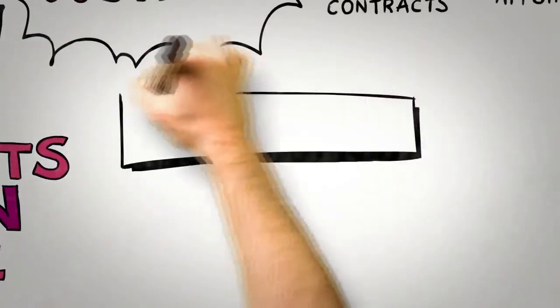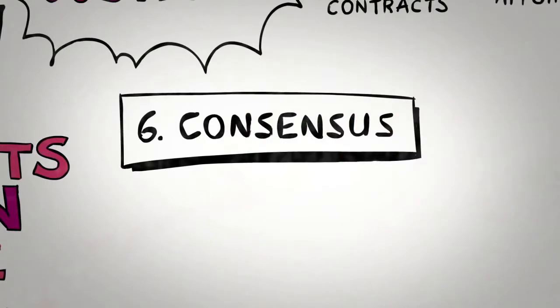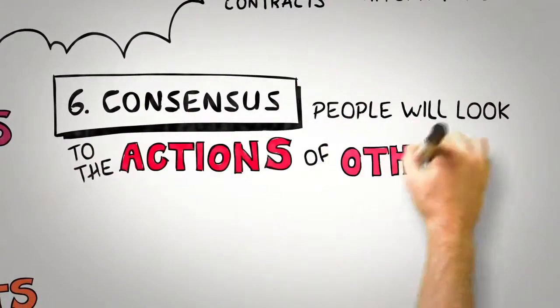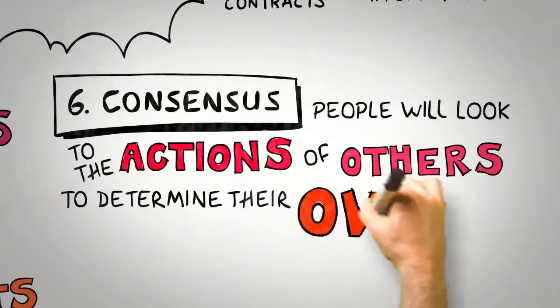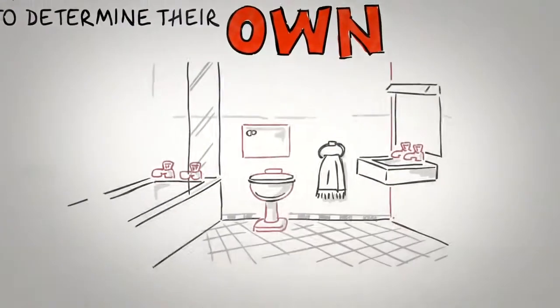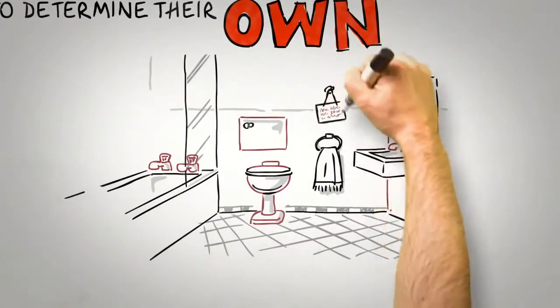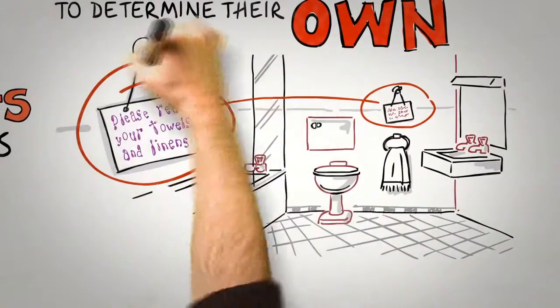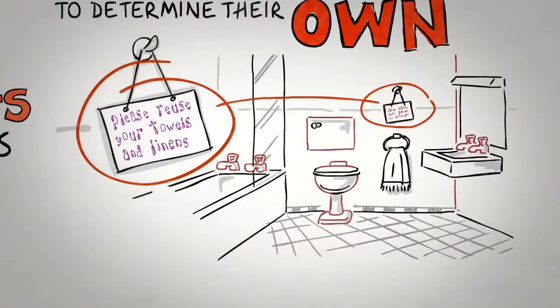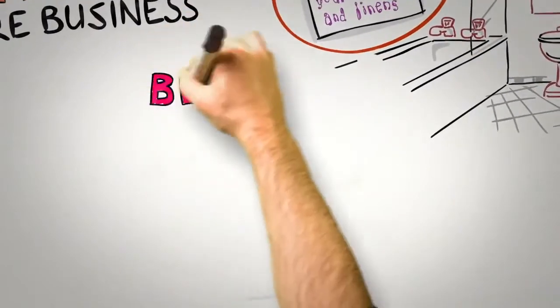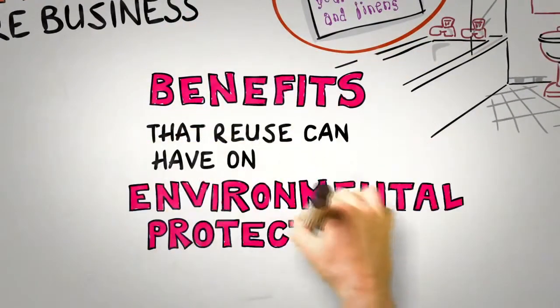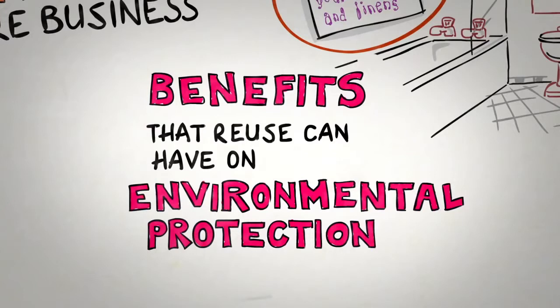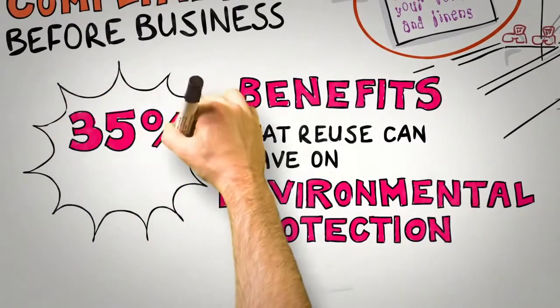The final principle is consensus. Especially when they are uncertain, people will look to the actions and behaviors of others to determine their own. You may have noticed that hotels often place a small card in bathrooms that attempt to persuade guests to reuse their towels and linen. Most do this by drawing a guest's attention to the benefits that reuse can have on environmental protection. It turns out that this is a pretty effective strategy, leading to around 35% compliance.